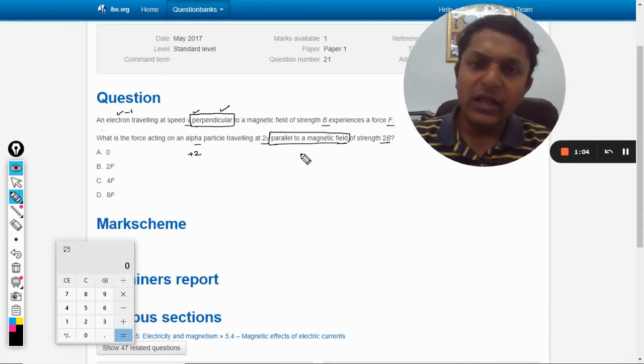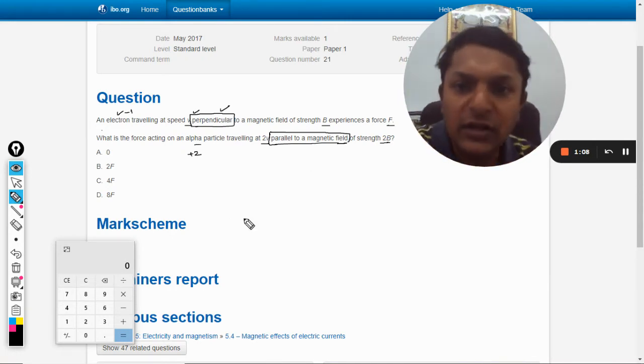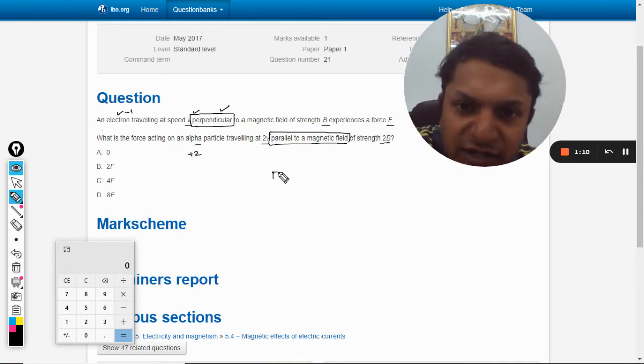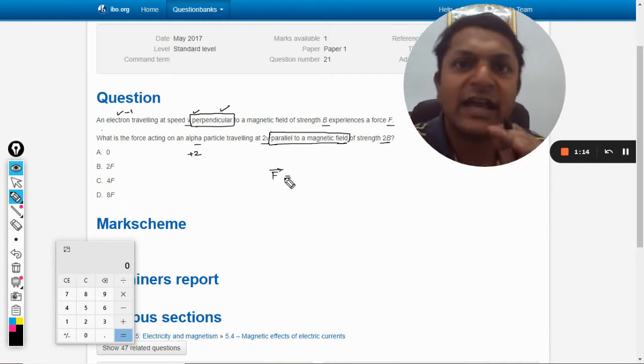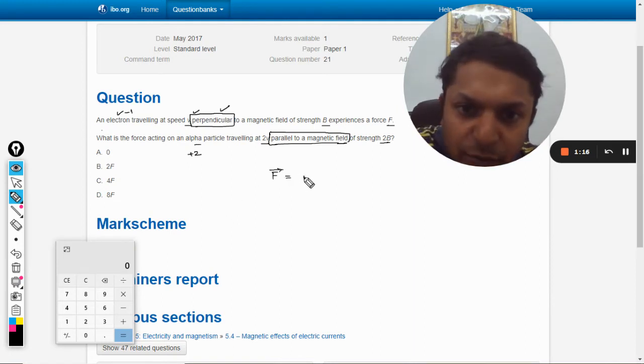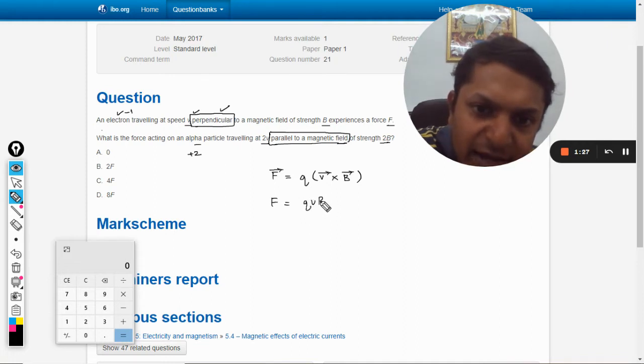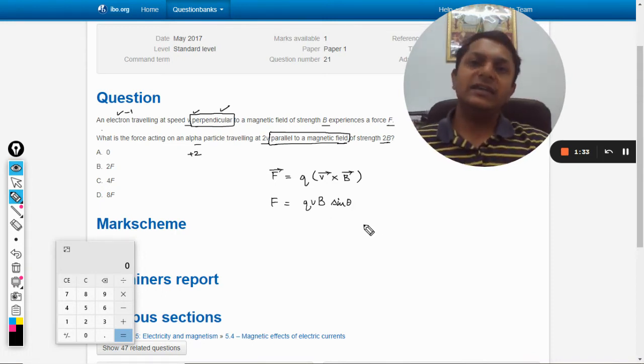Now, what is the formula to find the force on the charged particle? I believe it must be written in your book. I am giving you two formulations for that, vector as well as scalar. So the vector formulation is q into v vector cross B vector, and the scalar formulation for the same is given by q v B sin θ.